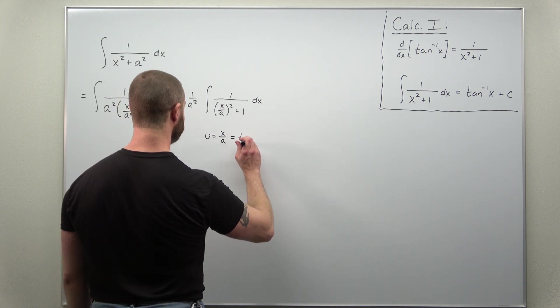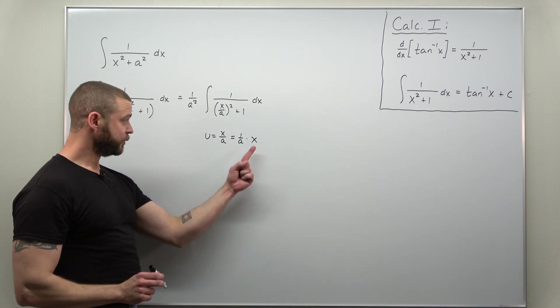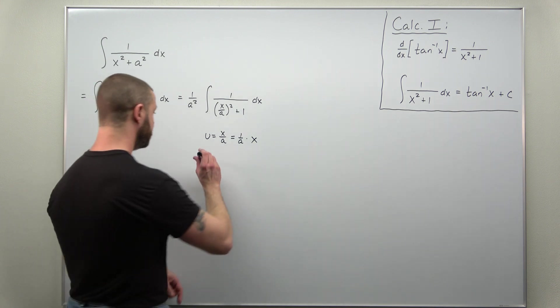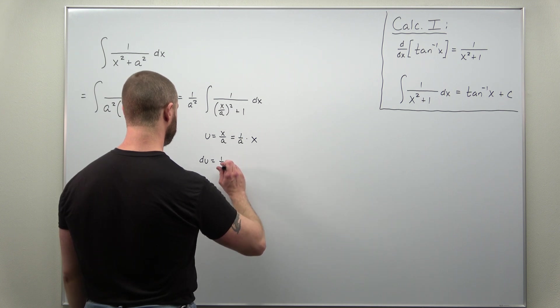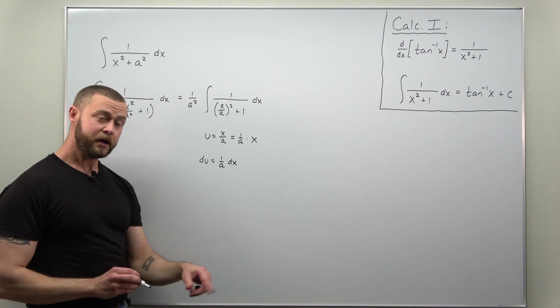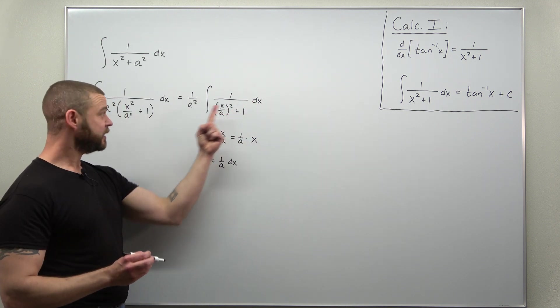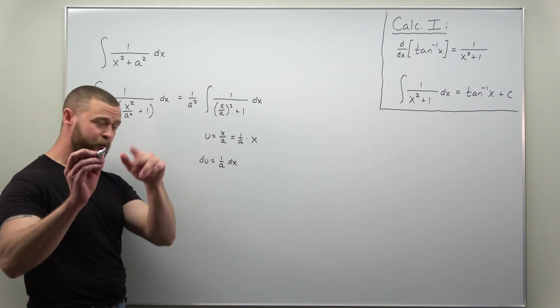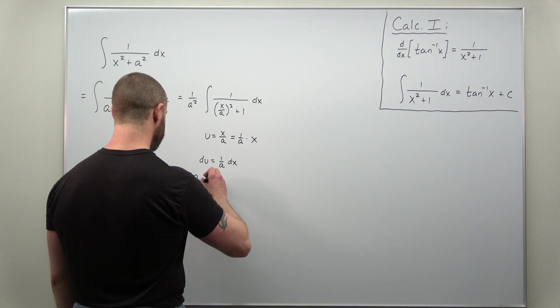So let's try u as x divided by a. And if that's easier to differentiate, think of that as 1 over a times x. So when you differentiate x you'll get 1. du here just comes out to 1 over a times dx. Now since we have in our integral here no factor of a, let's rewrite dx as a du.